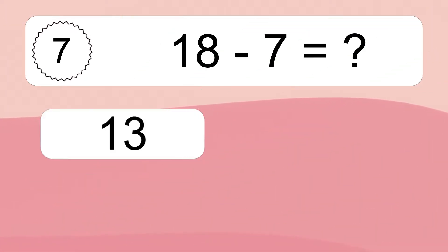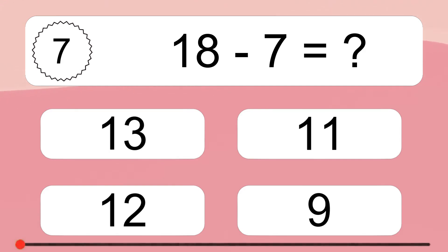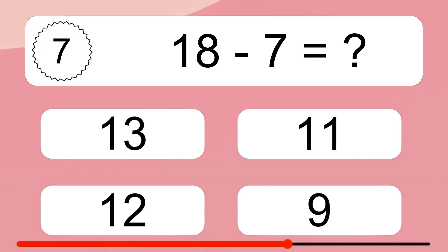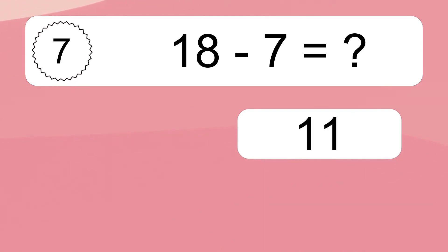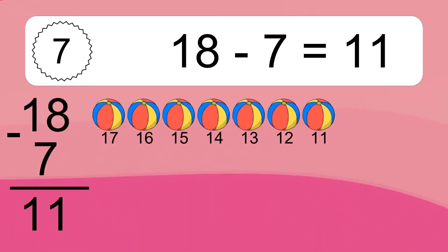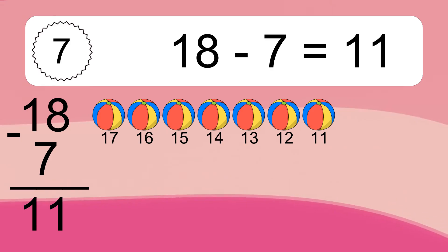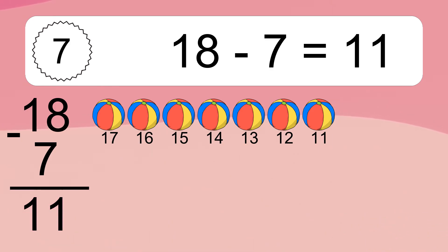18 minus 7 equals what? 18 minus 7 equals 11. Let's count it: 17, 16, 15, 14, 13, 12, 11.